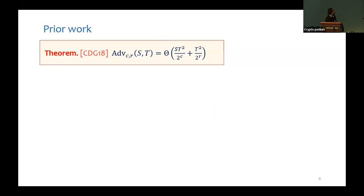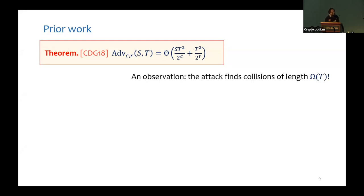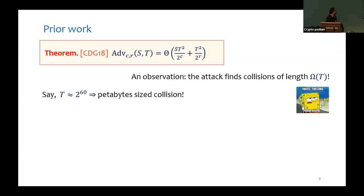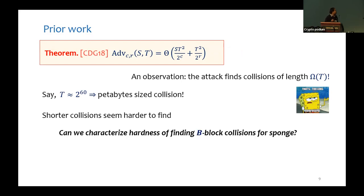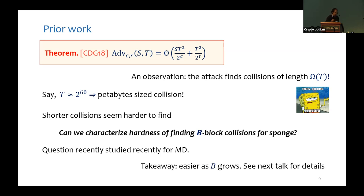Coretti et al. gave a tight characterization of the (S,T) advantage for collision resistance of sponge, proving an upper bound of ST²/2^c + T²/2^r and giving an attack achieving this advantage. However, the attack finds collisions of length roughly equal to T, which for usual parameter values are very long collisions of no real practical use. On the other hand, it seems that shorter collisions are somehow harder to find. Therefore, we ask: can we characterize the hardness of finding B-block collisions for the sponge construction? This question has been recently studied for Merkle-Damgård, and the key takeaway is that there is a quantitative jump in hardness with the value of B — collisions become easier to find as B grows.